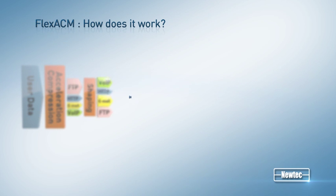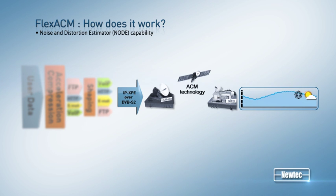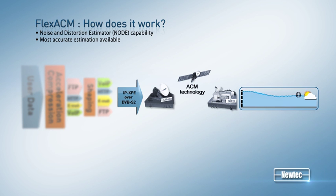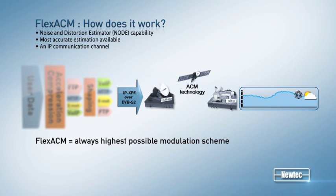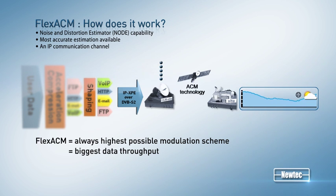The FlexACM system relies on the unique patent-pending Noise and Distortion Estimator, or NODE. NODE offers the most accurate estimation of the link condition available on the market. NODE anticipates degrading link conditions on each of the receiving points and feeds this information back to the transmission side to adjust the satellite link parameters.